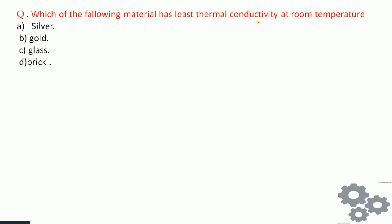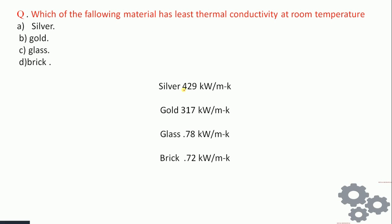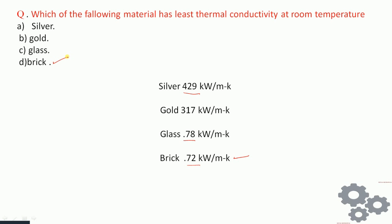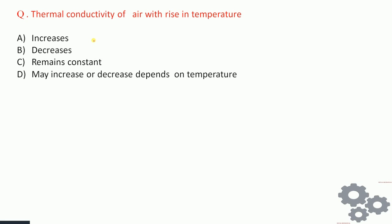Next question: which of the following materials has the least thermal conductivity at room temperature — silver, gold, glass, or brick? The thermal conductivity of silver is 429 W/m·K, gold is 317 W/m·K, glass is 0.78 W/m·K, and brick is 0.72 W/m·K. The least value is 0.72, so the answer is brick.